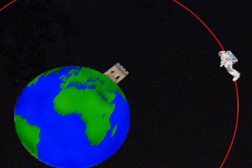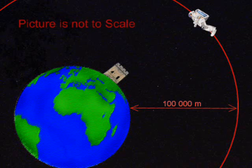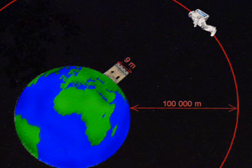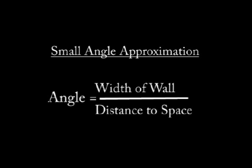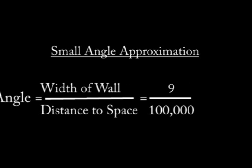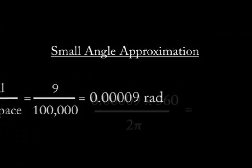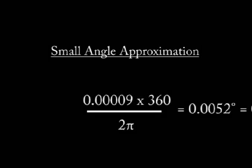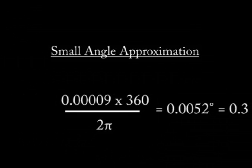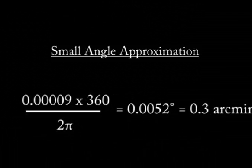The question we ask is: if you were suspended in space 100 kilometers from the surface of the Earth, straight above the Great Wall of China — which we assumed to be 9 meters wide — and you looked at it, what would be the angle formed by the width of the wall and your eyes? And how does it compare to your eyes' angular resolution? The method we use is called small angle approximation, a simplified yet sufficiently accurate method that avoids tedious trigonometric equations. All we have to do is take the width of the wall and divide it by the distance to space, and what we get is the angle in radians. To get the result in degrees, we simply divide by 2π and multiply by 360, and we get 0.0052 degrees, which is about equal to 0.3 arc minutes.